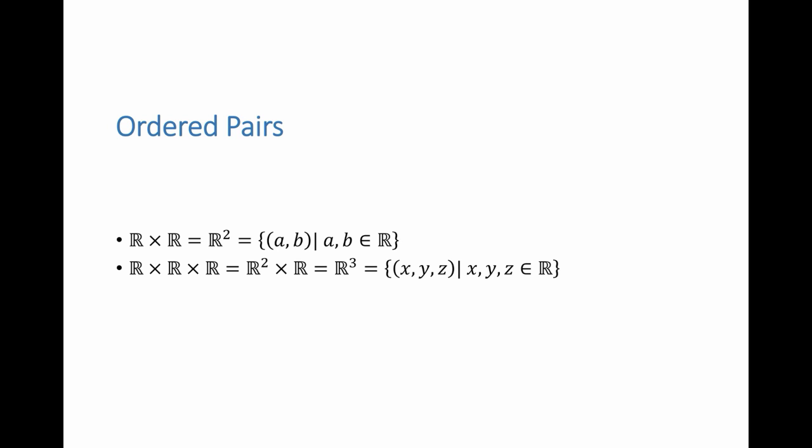We can use the ordered pair notation to define the plane, which is R × R, or R², the set of ordered pairs (a, b) where a and b are both real numbers. Similarly, R³ is R × R × R, where each element has three components X, Y, Z, and each component is a real number.